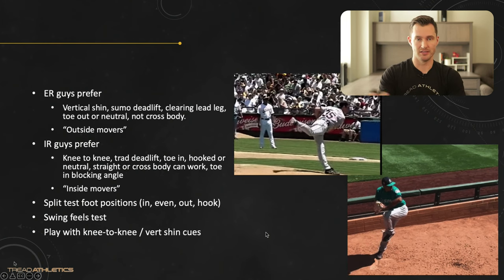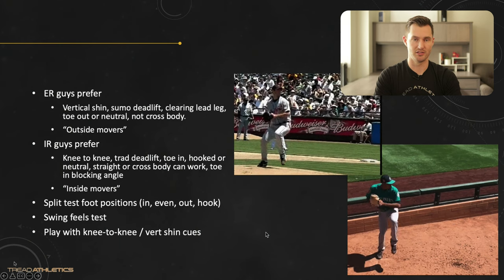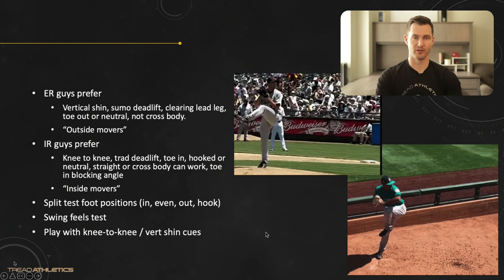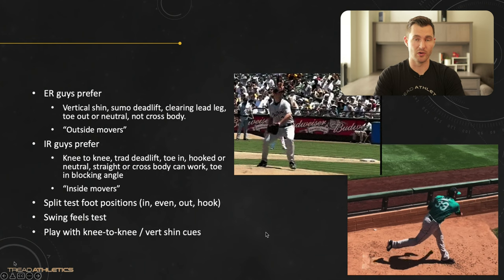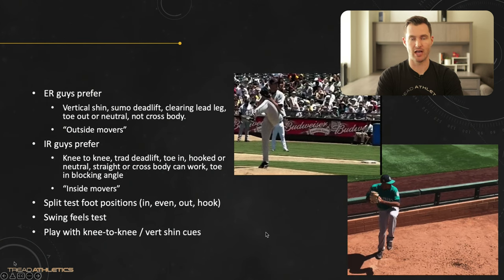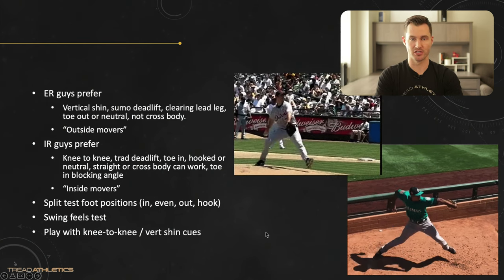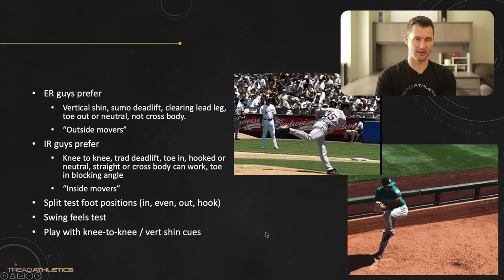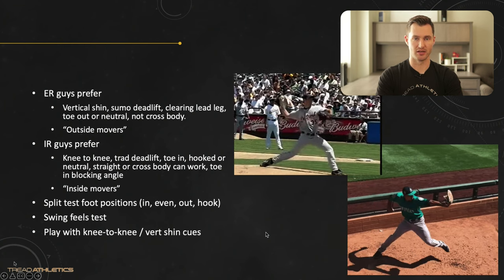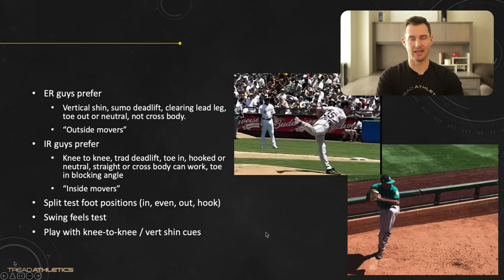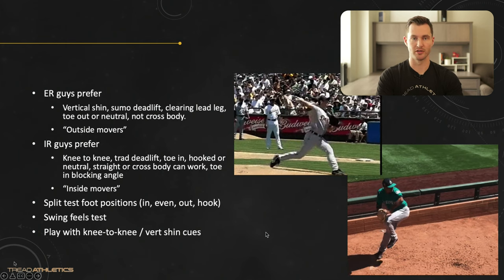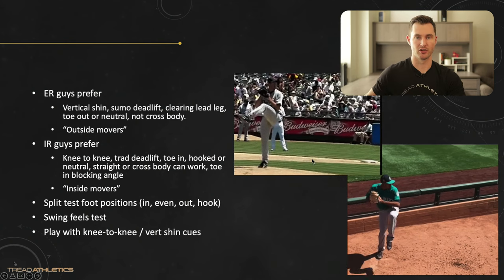His lead leg clears early. In the weight room, these guys do well with a sumo deadlift versus a traditional deadlift, and wider-stance squats with feet angled out. When it comes to the back foot on the rubber, you can see Verlander's foot angles back towards second base — that can work really well for ER dominant guys. Toe-out or neutral position on the rubber works for them, and they don't necessarily do well striding crossbody.